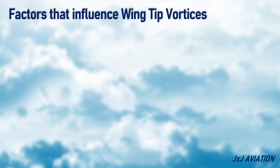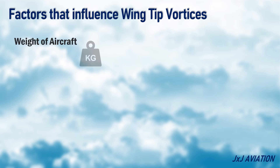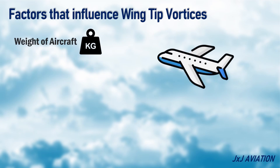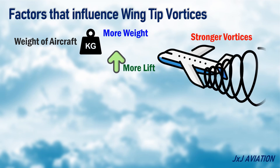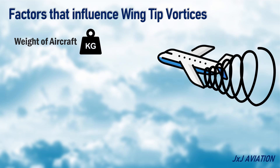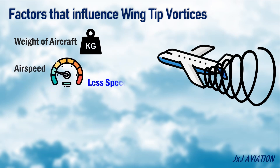Factors that influence wingtip vortices: Weight of aircraft — more weight means more lift is required, so the wingtip vortices will be stronger. Airspeed — less speed means the vortices will be stronger because the wing angle of attack will be higher.